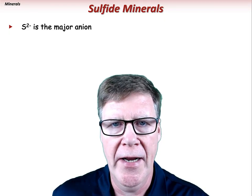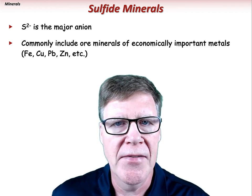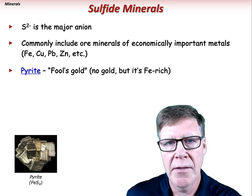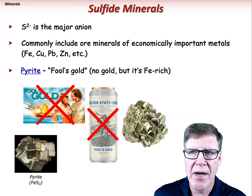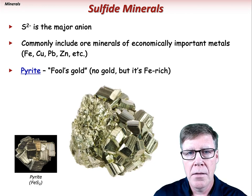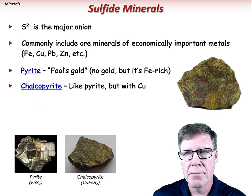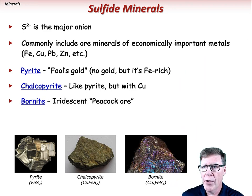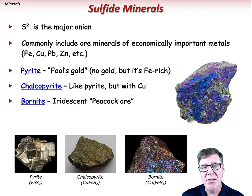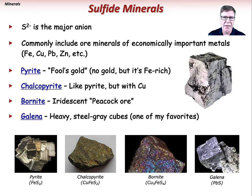Sulfides are minerals with sulfur as the major anion. Sulfides commonly form ore minerals with economically important metals including iron, copper, lead, and zinc. Pyrite — fool's gold — is a well-known sulfide that can form shiny, blocky, striated crystals, but contains only iron and sulfur. Chalcopyrite is similar to pyrite but includes copper and tends to have a more brassy luster. Bornite is a copper iron sulfide that displays iridescence — a play of colors — giving it the nickname peacock ore. Galena is a lead sulfide that forms dull to shiny cubes.